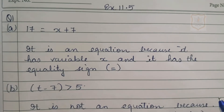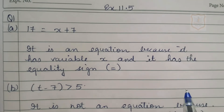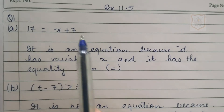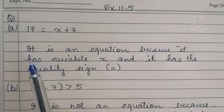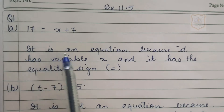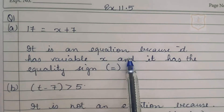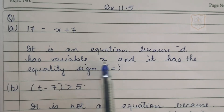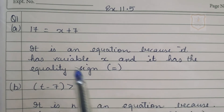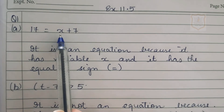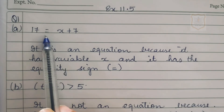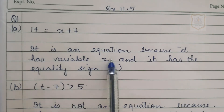Solution for question number 1, part A: 17 equals x plus 7. We have to state whether this is an equation with a variable or not. It is an equation because it has a variable x and it has an equality sign. This expression has a variable x and there is an equality sign, so it is an equation.